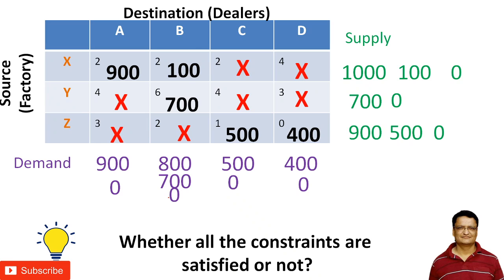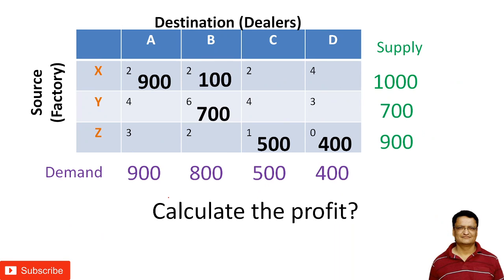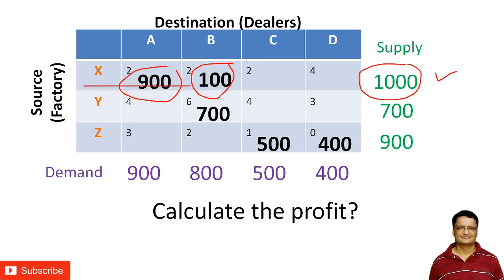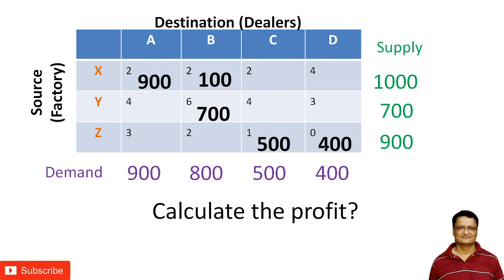Now let's verify all supply and demand constraints are satisfied. For the row constraints: 900 plus 100 equals 1000 ✓; 700 equals 700 ✓; 500 plus 400 equals 900 ✓. For the column constraints: 900 equals 900 ✓; 100 plus 700 equals 800 ✓; 500 equals 500 ✓; 400 equals 400 ✓. All supply and demand constraints have been satisfied.